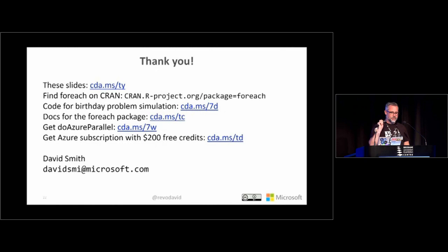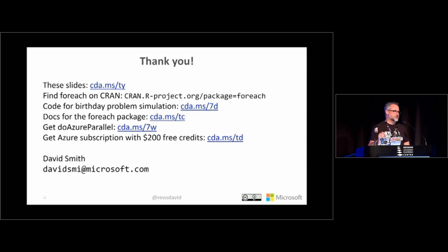All the information is on the slides available at the link on screen. The foreach package is available on CRAN. The birthday simulation code is available in a blog post. The doAzureParallel package is available for download on GitHub. To do cluster computation in Azure with doAzureParallel you'll need an Azure subscription, but new subscribers can get $200 in free credits. That's it — thanks very much.